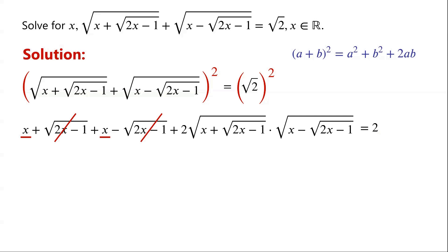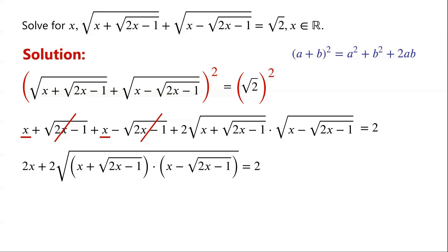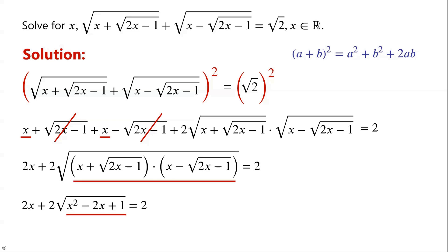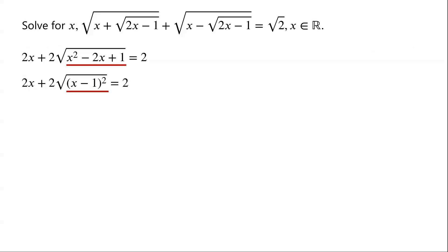So we can now write: 2x plus √(2x−1) times √(2x−1) equals 2. Now x plus √(2x−1) times √(2x−1) equals x² minus 2x plus 1, and x² minus 2x plus 1 equals (x−1)².